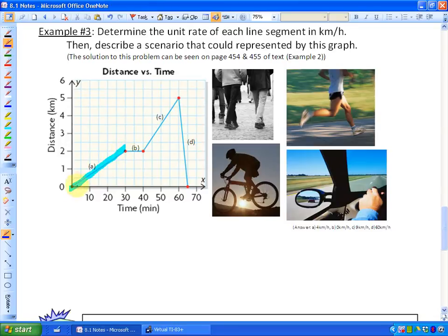So let's look at A. For line segment A the time was a total of from zero to 30, so that time was 30 minutes. And the distance here was from zero kilometers to two kilometers. So two kilometers.